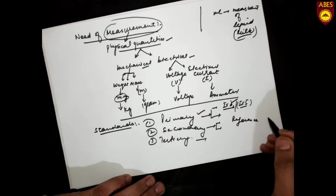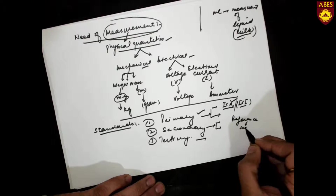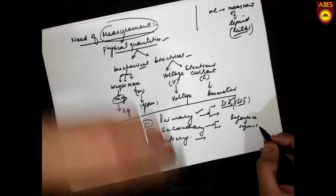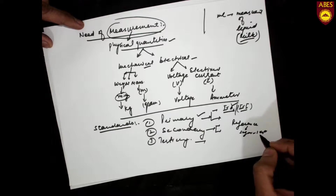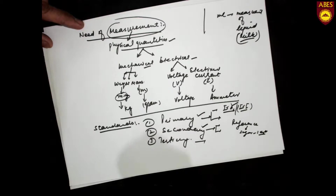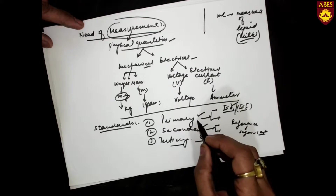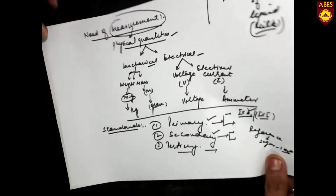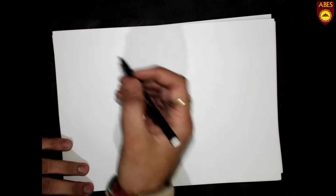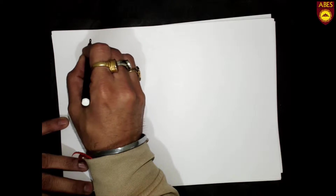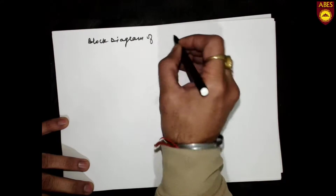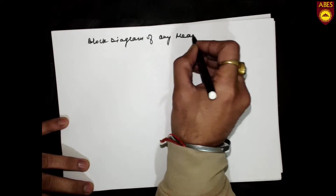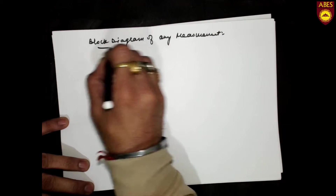For example, if I want to measure one kilogram of sugar, it would be measured against a standard weight. These standard weights are called secondary standards. Tertiary is a combination of both primary and secondary. Now we will move towards the block diagram of any measurement system.